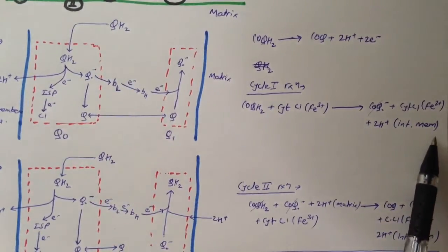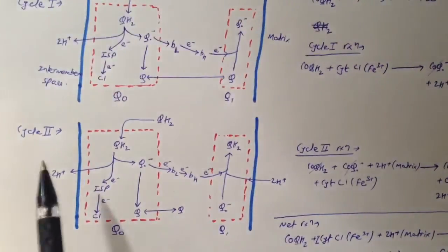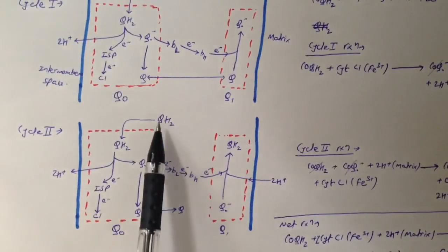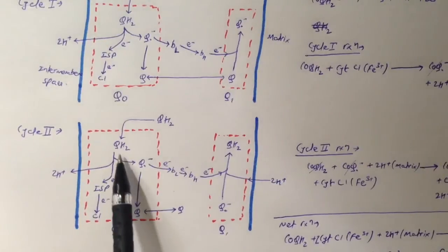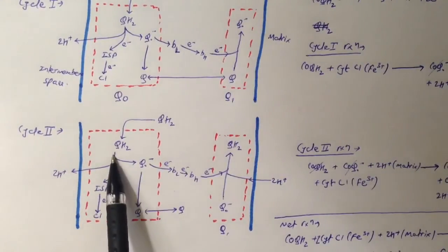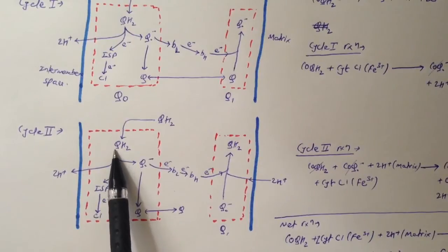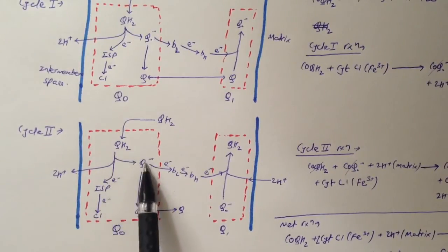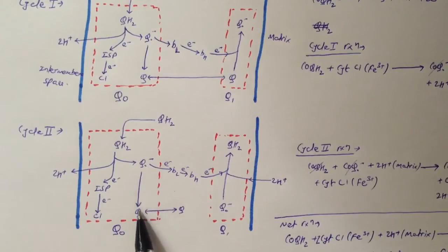In cycle II we again start with coenzyme QH₂, which comes and binds to the Q0 site. It gives 2 hydrogens to the intermembrane space and gives one electron to ISP; ISP gives its electron to cytochrome c1. After giving away 1 electron and 2 hydrogens it becomes Q•⁻. The Q•⁻ gives its electron to cytochrome bL and becomes Q.